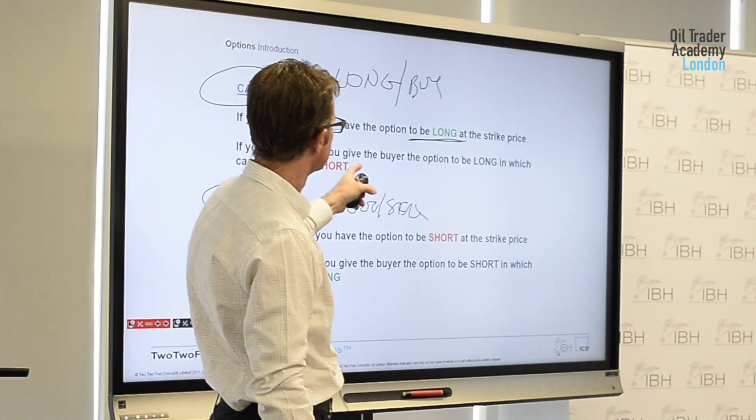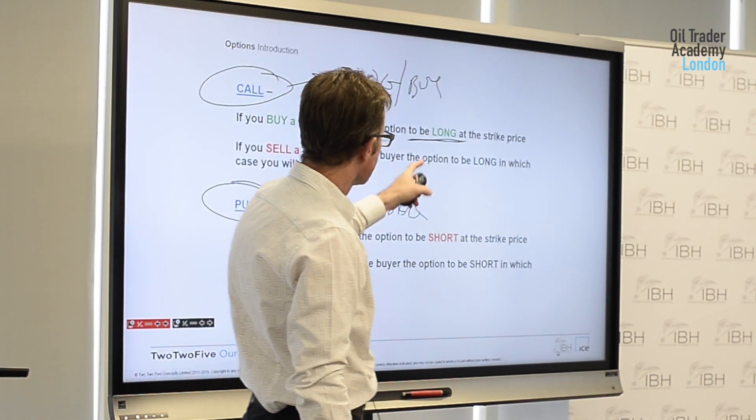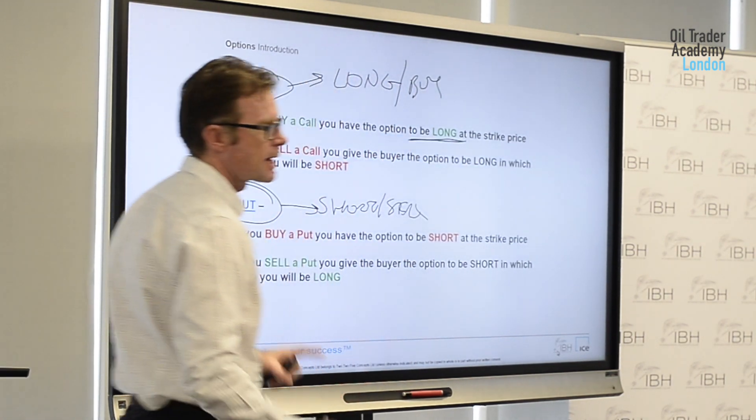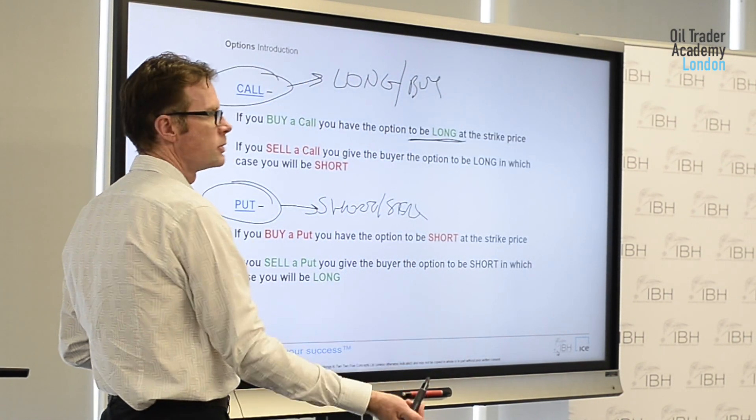So if you sell a call, you're giving the option to the buyer. And the buyer can choose to be long if they want to. So that means if they do choose to be long, you'll be short.